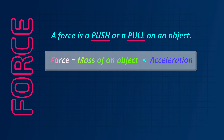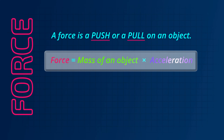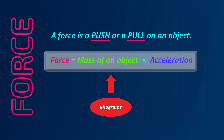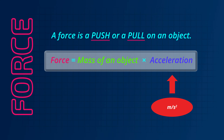So the rule is: force equals mass multiplied by acceleration. The force is measured in units called Newtons, named after the famous scientist who created this rule. Mass is measured in kilograms and acceleration is measured in meters per second squared.